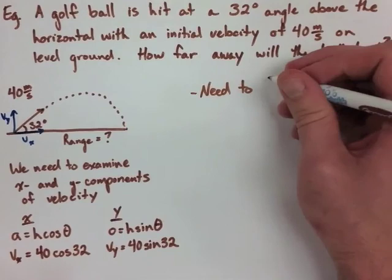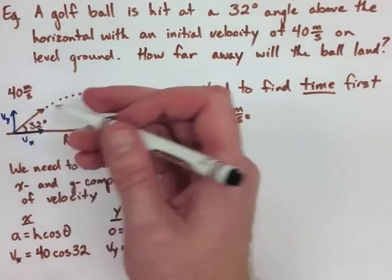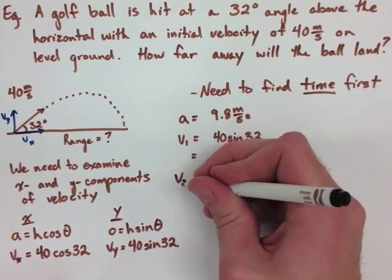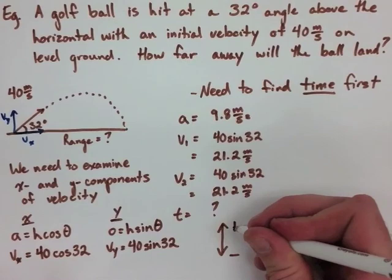Now that we've broken this up into x and y, it's always the most important thing to find the time first in a projectile motion question. We use the y component to find the time because we can add an acceleration, we have our initial velocity, and we know what our final velocity is going to be equal to as well, because this is a parabola. When we solve, we find initial velocity is 21.1 meters per second, final velocity is 21.2 meters per second, and we're trying to find our time.